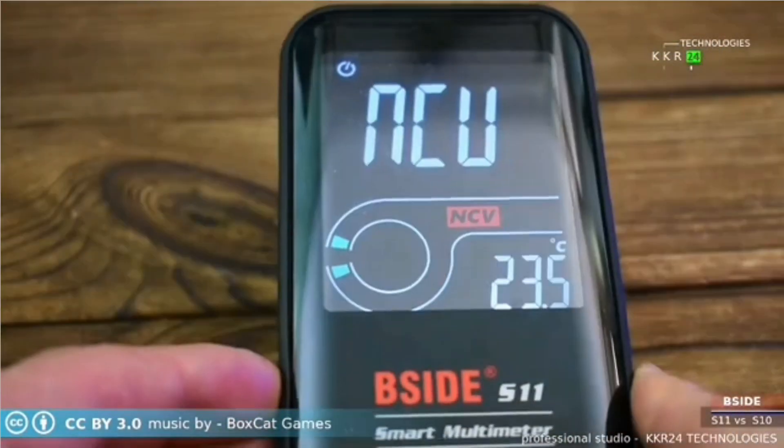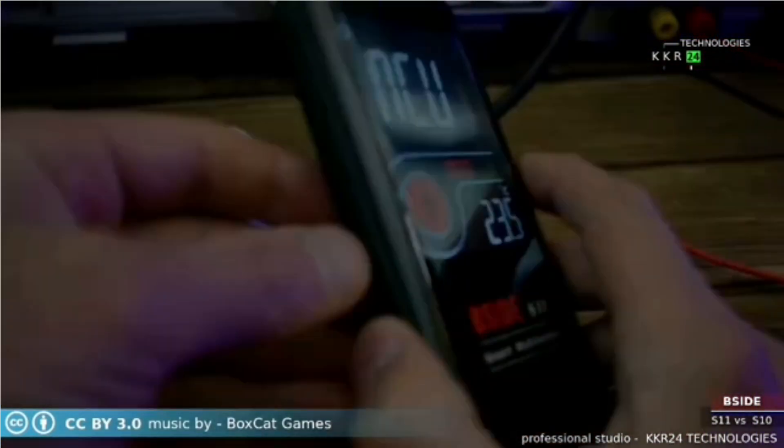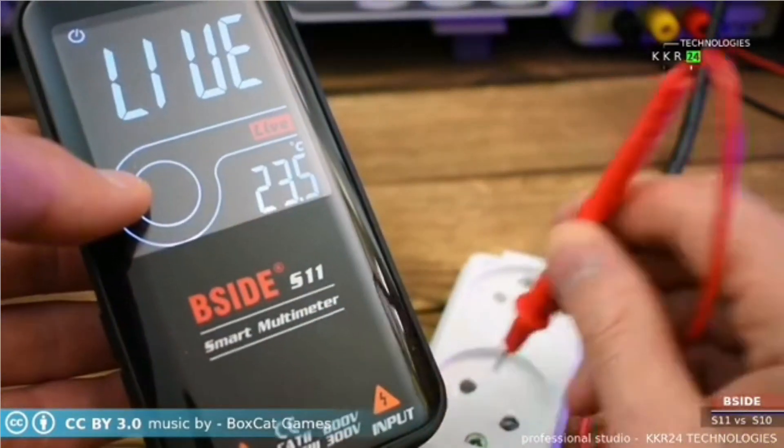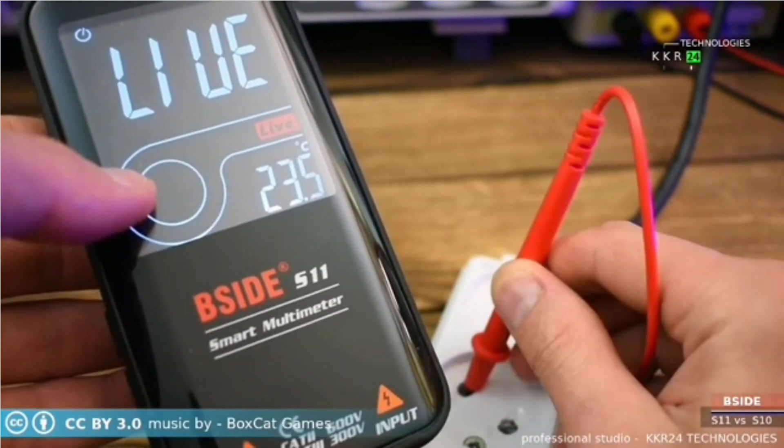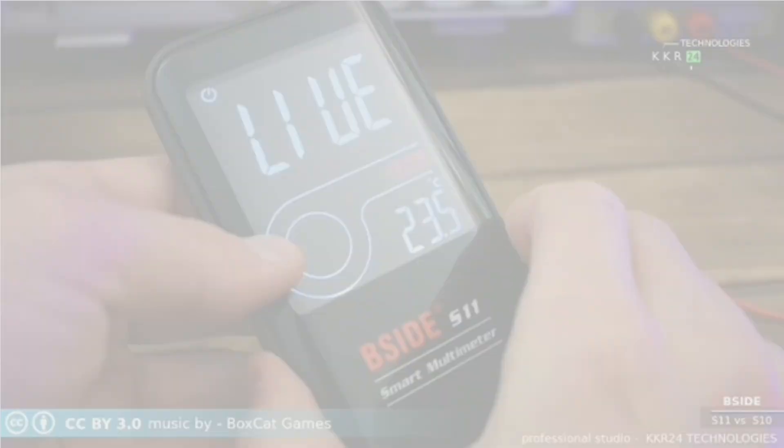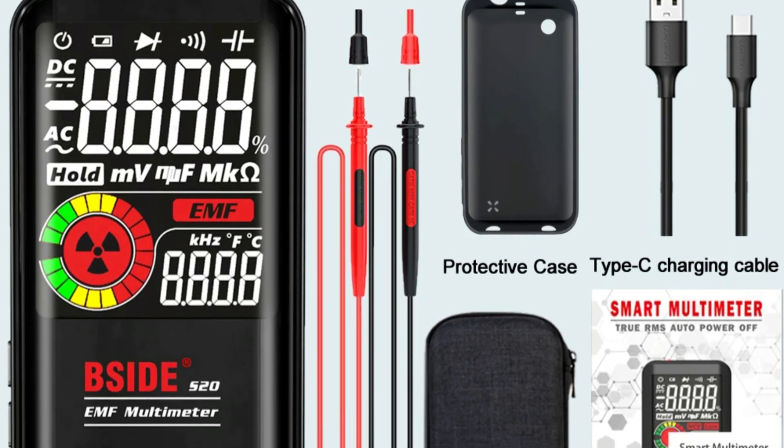Additional functionalities include continuity testing, diode testing, frequency measurement, and battery testing. The S20's digital display and backlight feature make readings clear and easy to interpret. It comes with a rechargeable lithium battery, ensuring sustainability and long-term use.